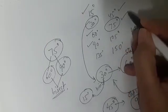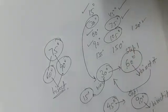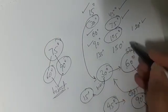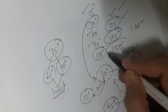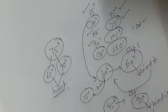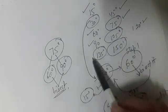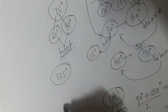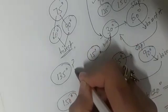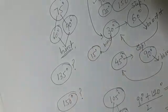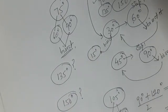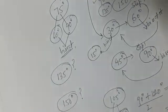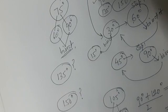Now as homework: think about how you will construct 135° and 150°. All you need to use are the angles you have already constructed. Keep trying — use bisection of angles you know to arrive at 135° and 150°.